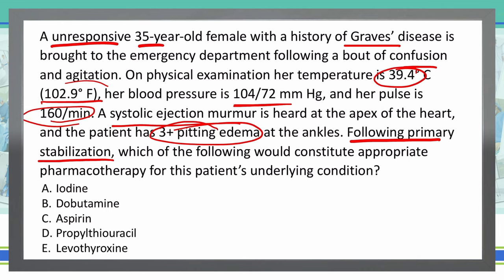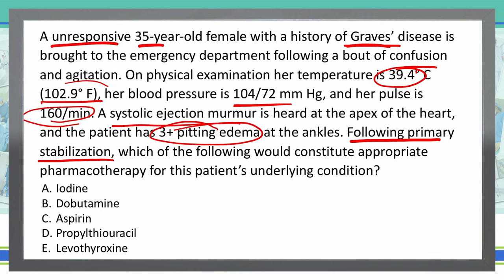We have a patient that presents with what is a medical emergency. They are unresponsive, and they have a history of Graves' disease. We're talking about something that looks like it has something to do with the thyroid. Graves' disease, associated with high temperature, tachycardia, pitting edema — all those things lead me to believe we're dealing with a form of thyrotoxicosis. Specifically, this is a pretty extreme form: what we're seeing is a thyroid storm.